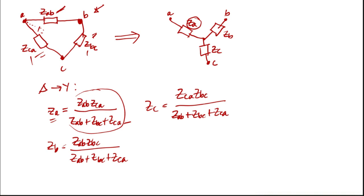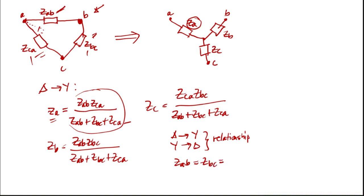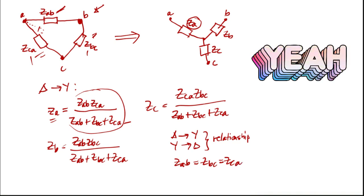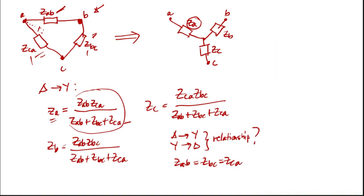Now we are getting the relationship between delta and Y, and also Y to delta. If the system has the same impedances — meaning if Zab equals Zbc, which is also equal to Zca — what will be the relationship? Suppose we name Zab, Zbc, and Zca all equal to Z.